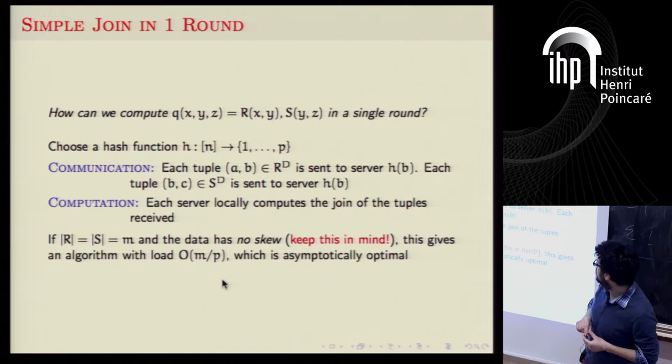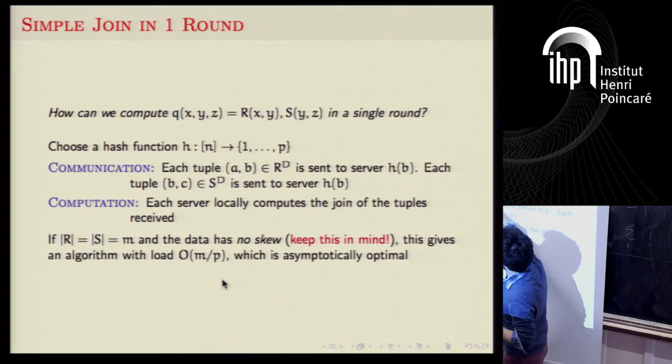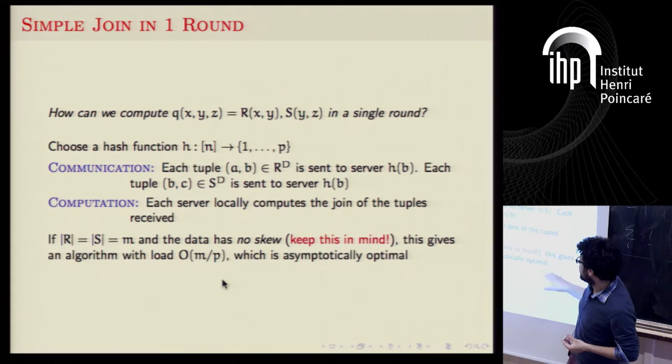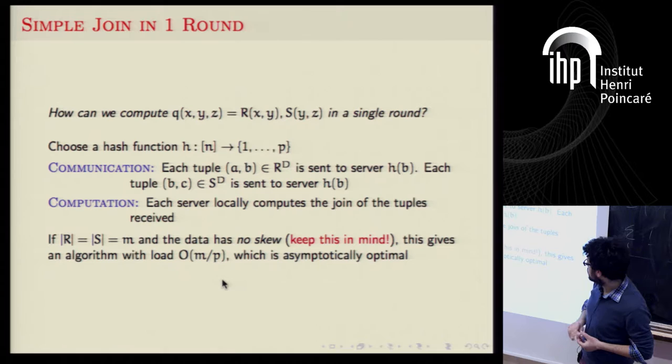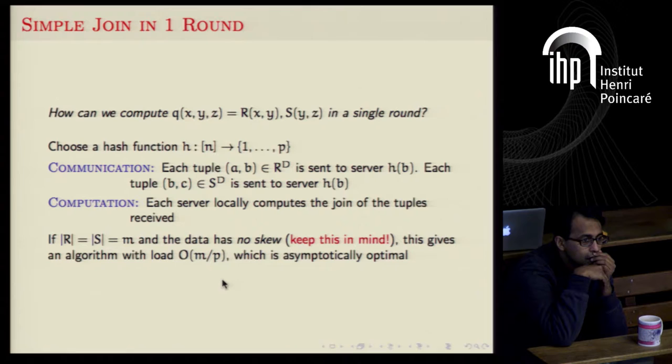What about the load? If the data has no skew — assume for now that each y value appears exactly once or only very few times — then if you hash on y, the relation will be evenly distributed between your P machines with high probability. So this gives a load on the order of m over P, which is basically optimal since you can't do better than m over P.